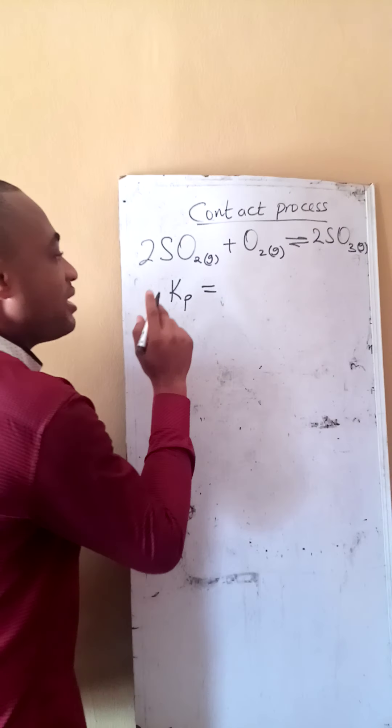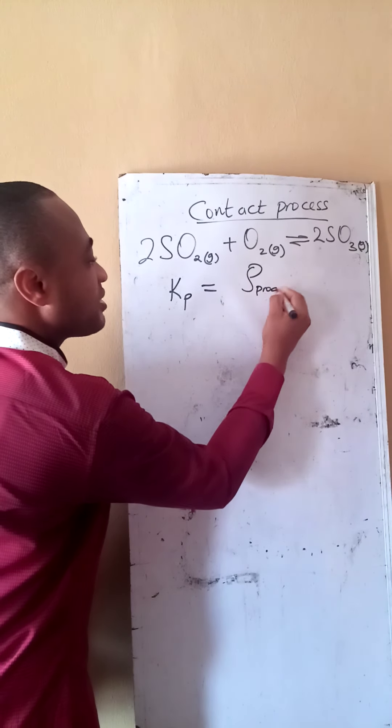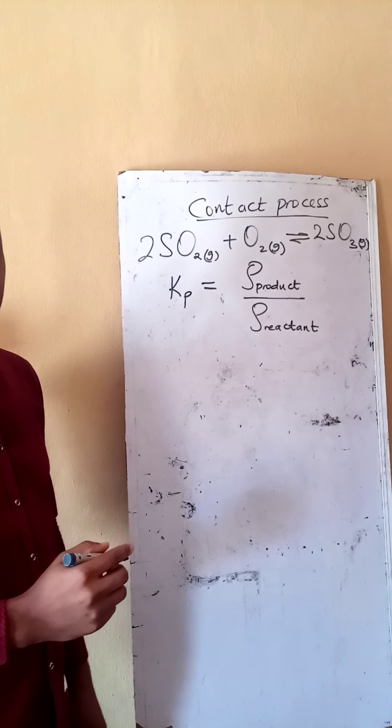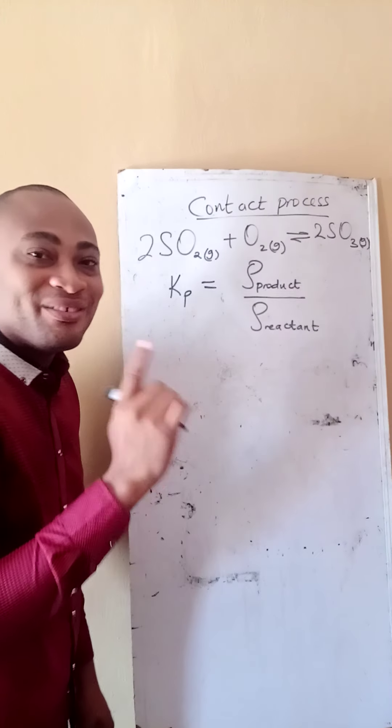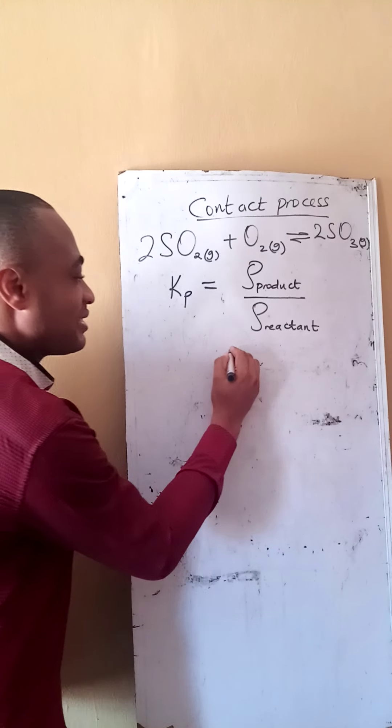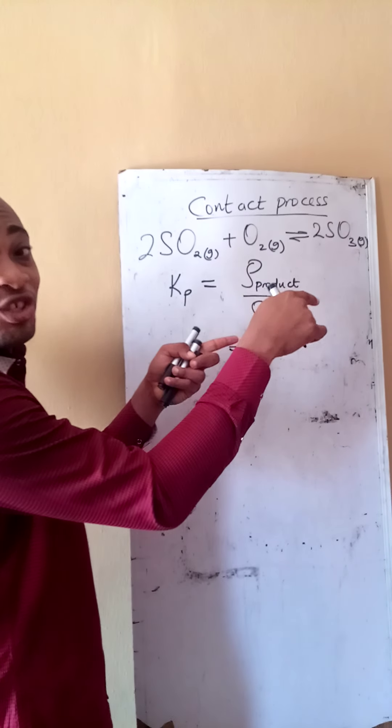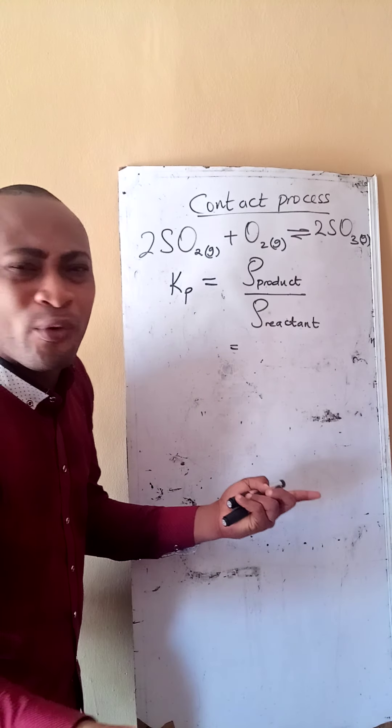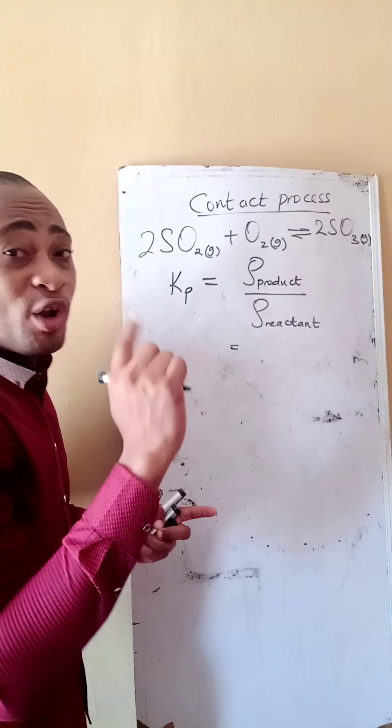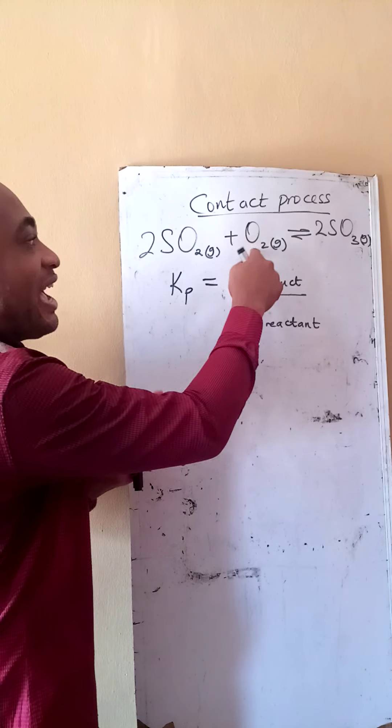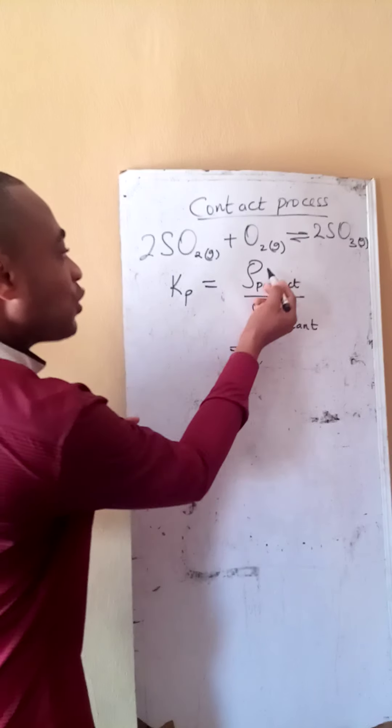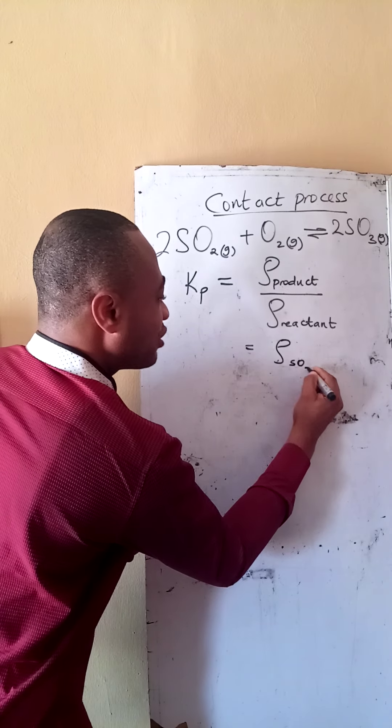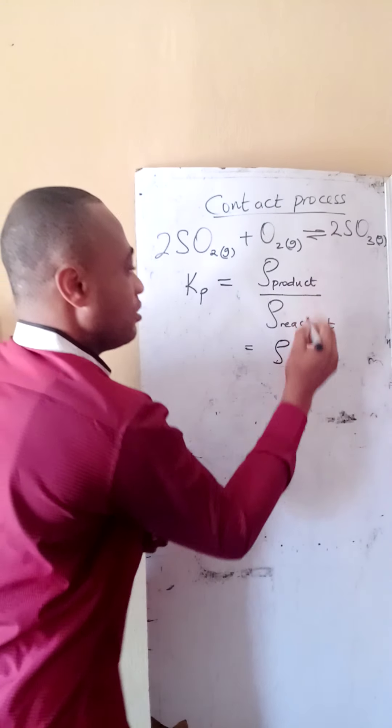If I want to get my KP for this reaction, remember I said during the equilibrium video that KP has to do with partial pressure of products, all divided by the partial pressure of the reactants. I said this funny looking symbol represents partial pressure. Everything partial pressure, take note. What are our reactants? What are the products? Sulfur trioxide is the only product we have there. My reactants, I have sulfur four oxide and I have oxygen gas.